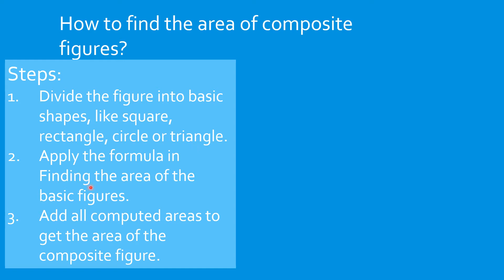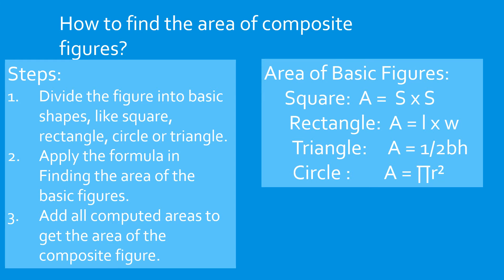Then apply the formula in finding the area of the basic figures. For the area of a square, it is s times s. For a rectangle, it is length times width. For a triangle, it is one-half base times height. For a circle, it is pi r squared.